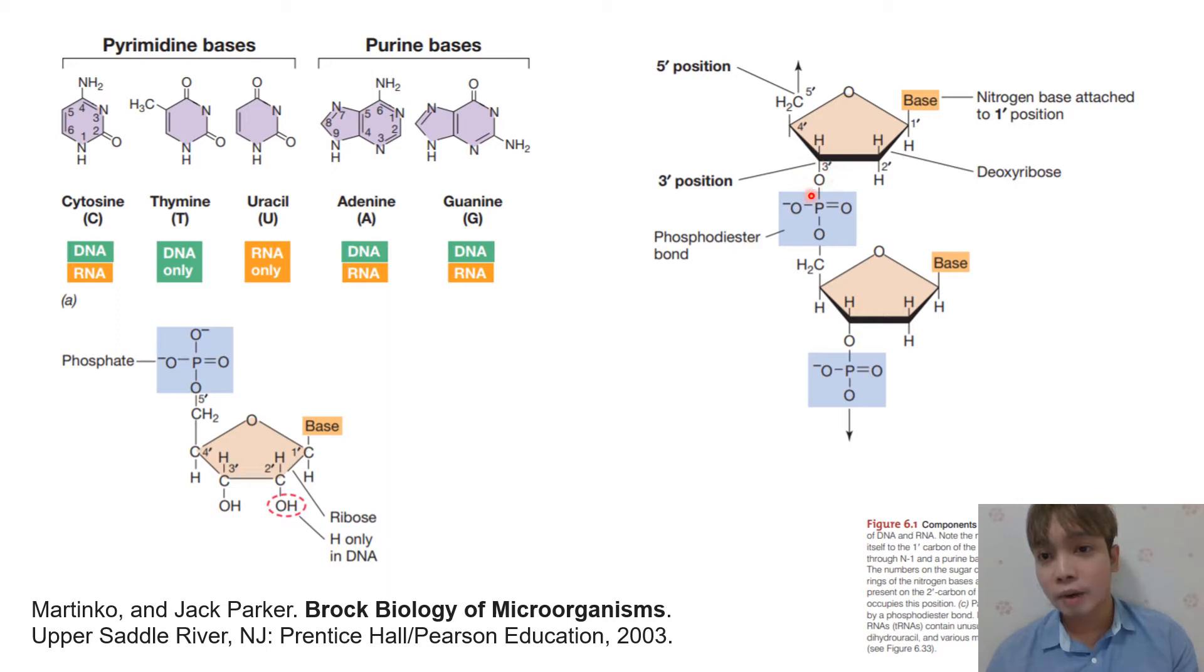Why phosphodiester bond? Because we have two ester bonds. Carbon number three of sugar A, and then another ester bond here at carbon number five of sugar B. That's why phosphodiester—two ester bond formation. So again, deoxyribose doesn't have oxygen at carbon number two, and ribose found in RNA has oxygen at carbon number two.